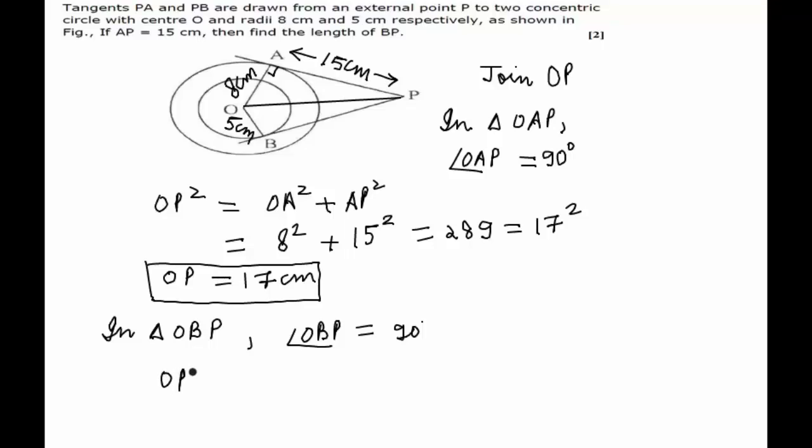we get OP square is equal to OB square plus BP square. Substituting the values we know, 17 square is equal to 5 square plus BP square. Since only BP is unknown over here,